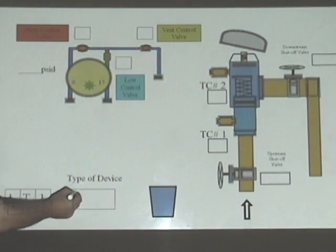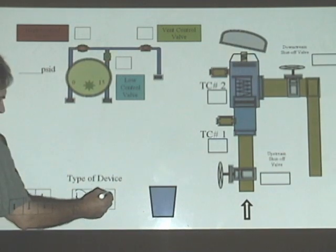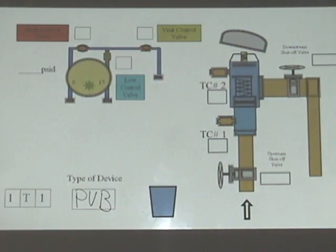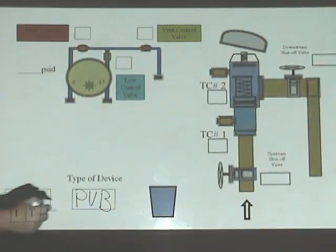Type of device is a pressure vacuum breaker. Determine the direction of flow.